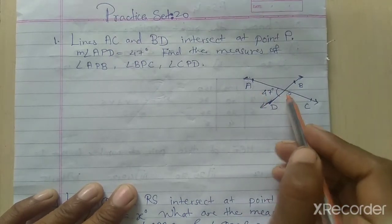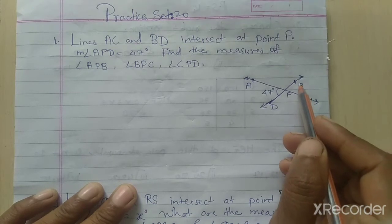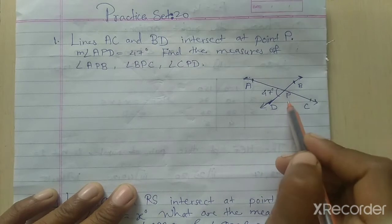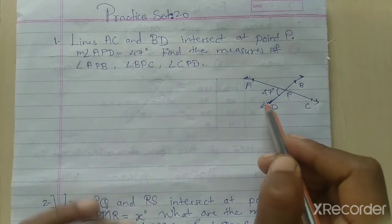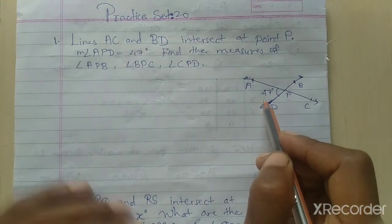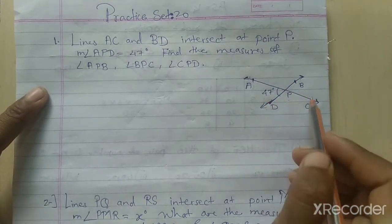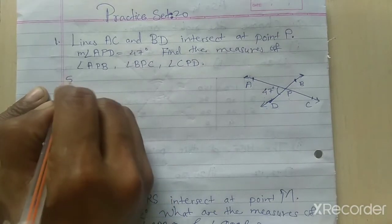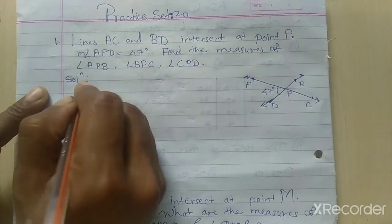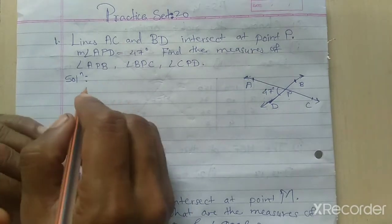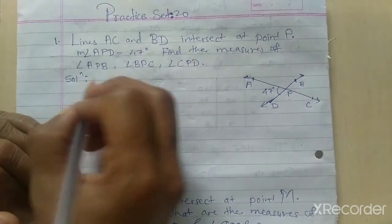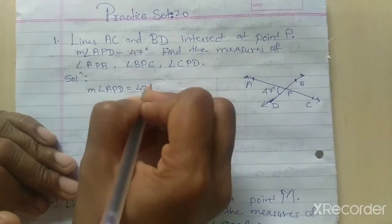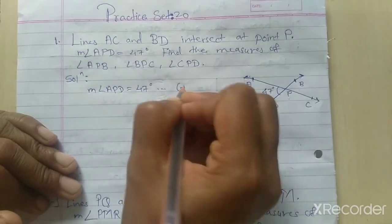We have to find angle APB, angle BPC, and angle CPD — three angles in total. Out of four angles, one is given; we have to find the remaining three. Now, first solution: angle APD equals 47 degrees, which is given.